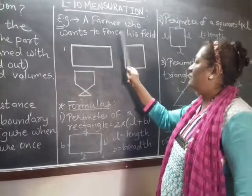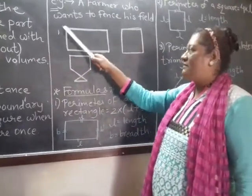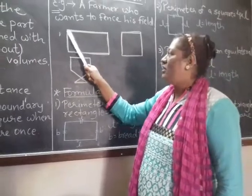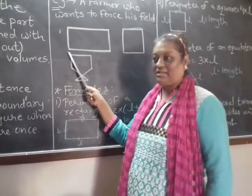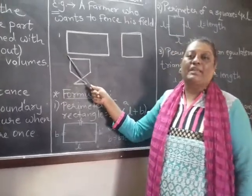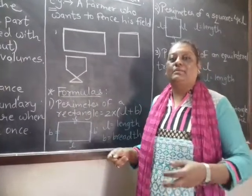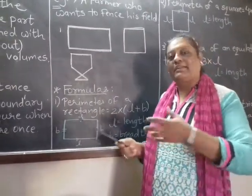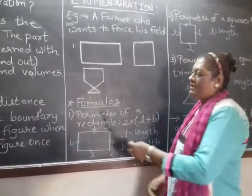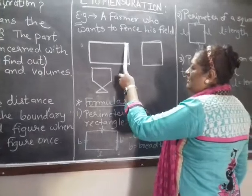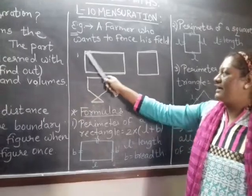For example, a farmer who wants to fence his field. You know fencing. Generally, the farmers fence the field on the boundaries to protect his crops from being eaten by the animals or some unknown animal or some of the people that cannot enter into that farm. So perimeter is nothing but you can see this is the boundary which I had made with orange color that is called the perimeter.